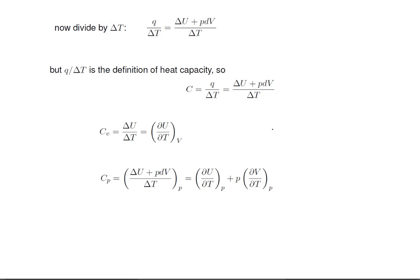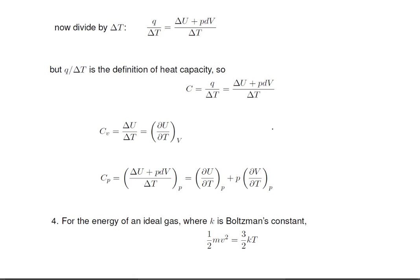This second term keeps track of the work done on the universe as the system expands. For the energy of an ideal gas, where k is Boltzmann's constant, we have 1 half mass times velocity squared equals 3 halves kT.